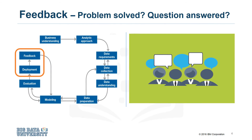Throughout the data science methodology, each step sets the stage for the next. Making the methodology cyclical ensures refinement at each stage in the game. The feedback process is rooted in the notion that the more you know, the more that you'll want to know. That's the way John Rollins sees it, and hopefully you do too.